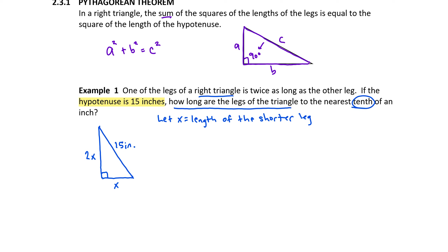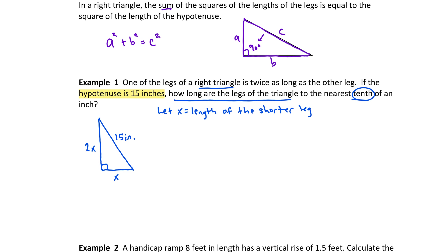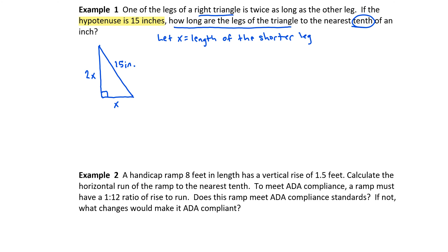The question we're attempting to answer is how long are the legs of the triangle, rounded to the nearest tenth of an inch. Here's where we apply the Pythagorean theorem. An important thing to remember is that the legs are on one side of the equation, and the hypotenuse is always by itself. Applying the Pythagorean theorem, we have X squared plus (2X) squared equals 15 squared. Notice the parentheses around 2X — that ensures we square both factors. So 2 squared is 4 and X squared is X squared, giving us 4X squared, and 15 squared equals 225.